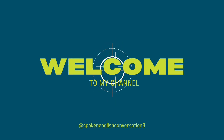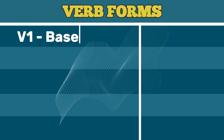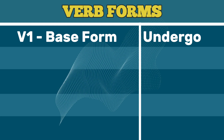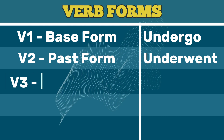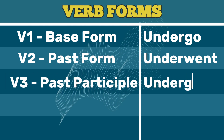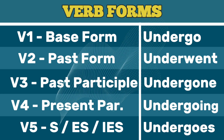Spoken English Conversations, subscribe please. V1 base form: undergo. V2 past form: underwent. V3 past participle: undergone. V4 present participle: undergoing. V5 third person singular: undergoes.